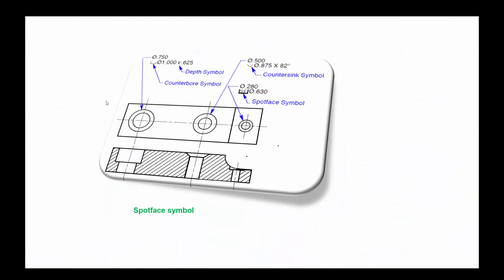Next we'll see the spot face symbol. Wherever the spot face is available — in the case of a counterbore, you can see you have designated counterbore — but wherever the spot face symbol is there, you'll be using the spot face mechanism for welding and you need to use that. From the drawing you can see it will be applied there and that tolerance will be complied. This is also one of the enhancements.